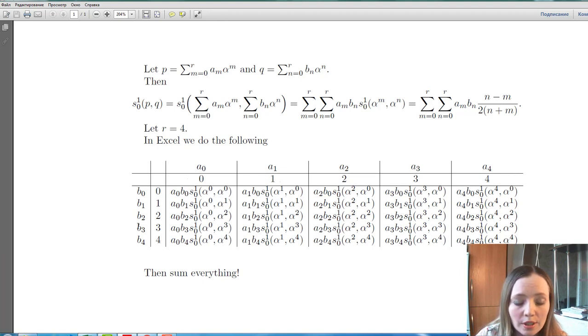The first column consists of the coefficients of the second polynomial and the second column consists of corresponding degrees of alphas. And here we have the summands of this sum.